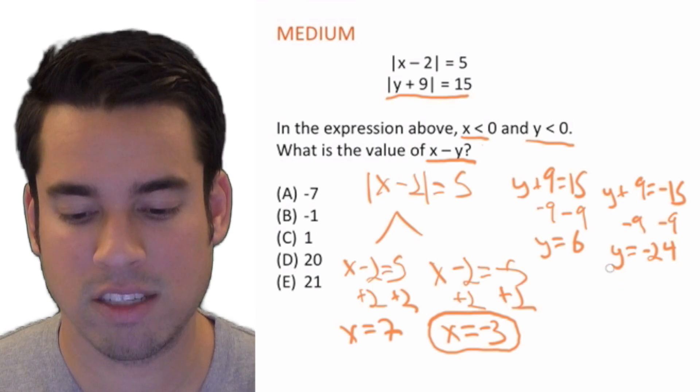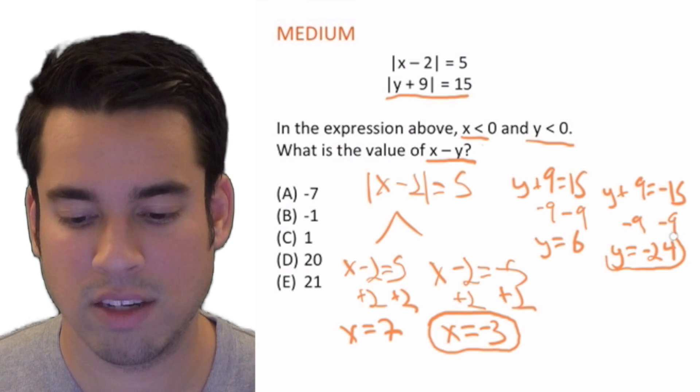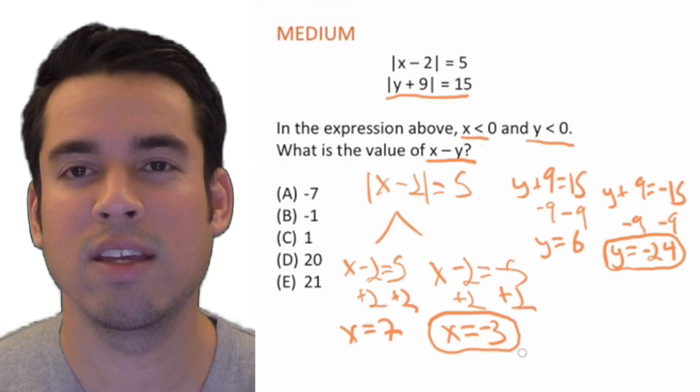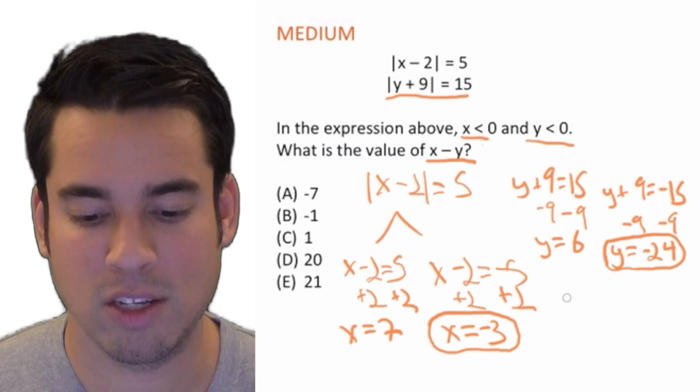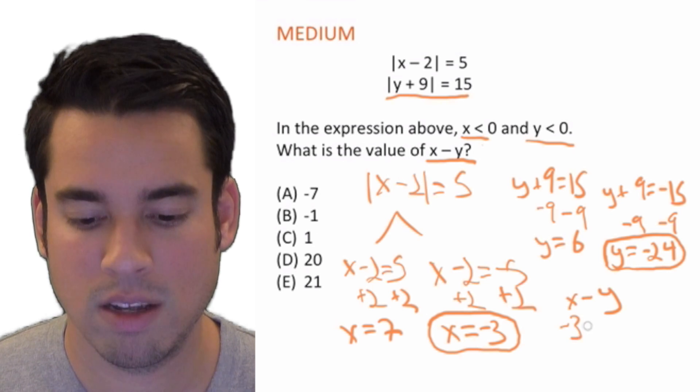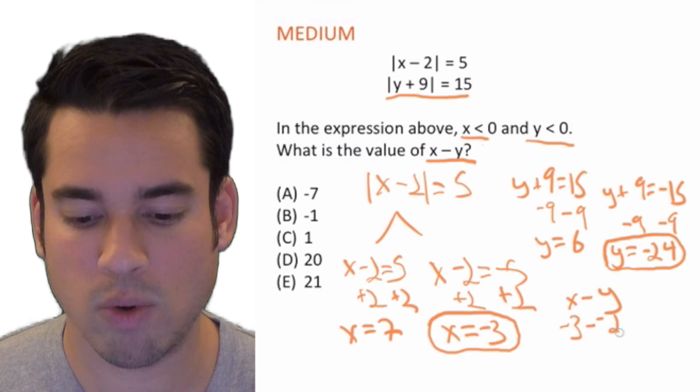So again, y = 6, that's not a negative number, so it has to be y = -24. Now remember, what did the original question ask us? It wants to know what x - y is. So now we have the values: -3 - (-24).